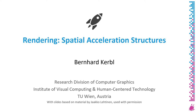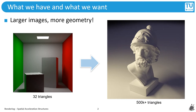Welcome to this next lecture in the rendering course. This time we will be talking about spatial acceleration structures in the context of rendering. In our solution from last time, we were able to render some decent looking images with good path traced effects, and if we spend enough time, the quality turns out okay. But we found a roadblock when we tried to handle larger scenes and high image resolutions.